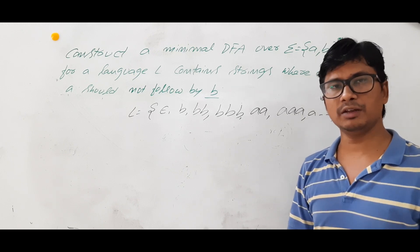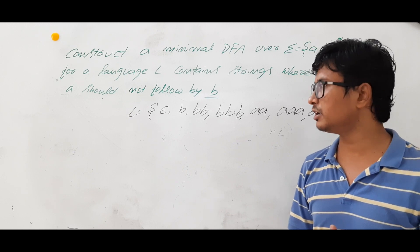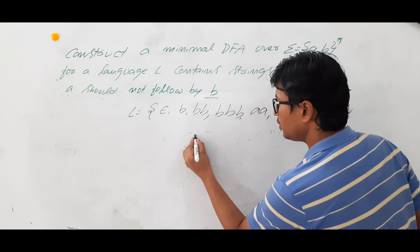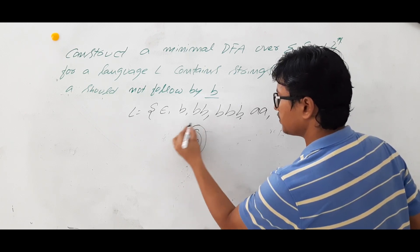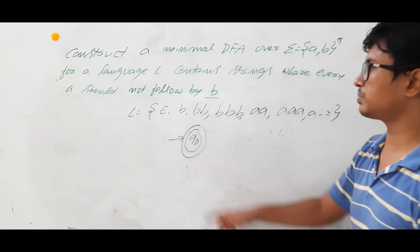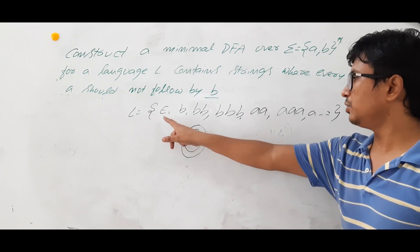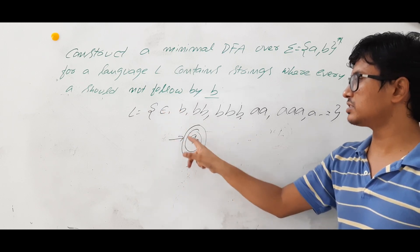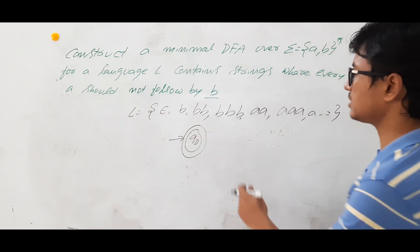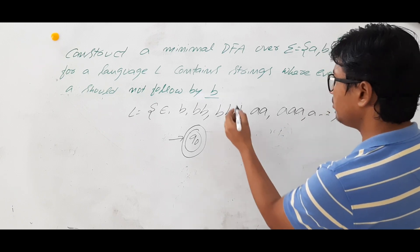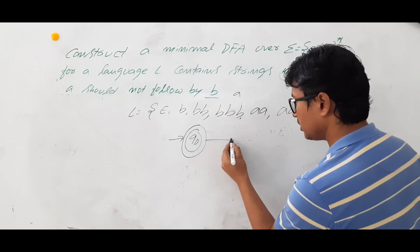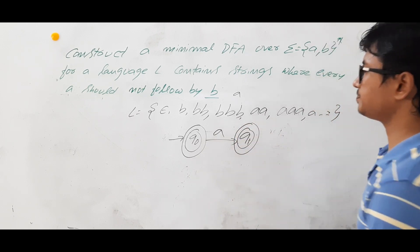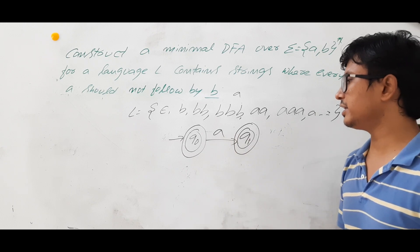Since it is an infinite language, there may or may not be a DFA — we will check. Q0 is the initial state, and since epsilon is in the language, the initial state should also act as a final state. Even a single A should be accepted, so on A from the initial state Q0, we go to a final state Q1.